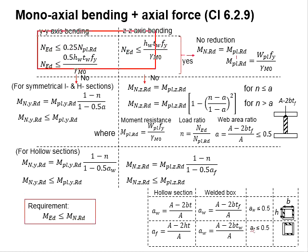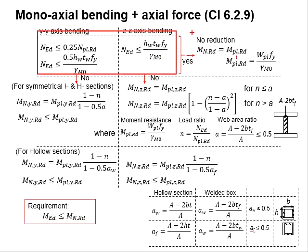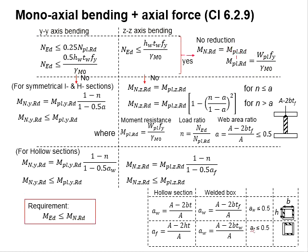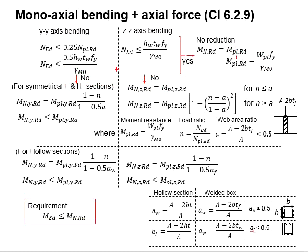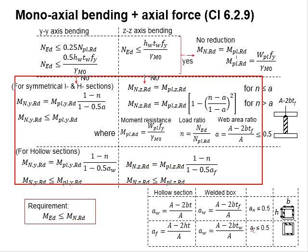If these conditions are complied with, there will be no reductions in terms of moment resistance. However, if they are not complied with, then reductions should be applied depending on the type of member.